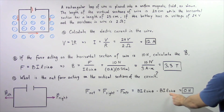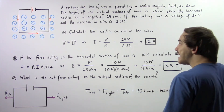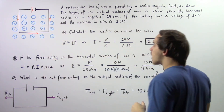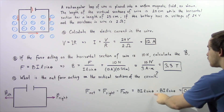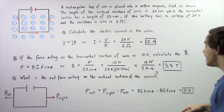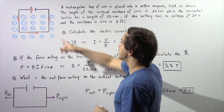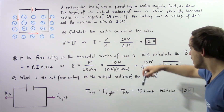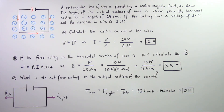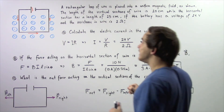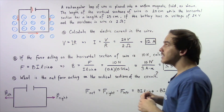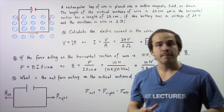These quantities have the same exact magnitude but opposite signs: B·I·L·sin(theta) minus B·I·L·sin(theta). Both angles are 90 degrees since both sections are perpendicular to the magnetic field. The lengths, currents, and magnetic field values are all the same since B is uniform. Subtracting equal quantities gives us zero newtons. Therefore, the net force acting on the vertical sections of the wire is zero, because these forces are equal and opposite.